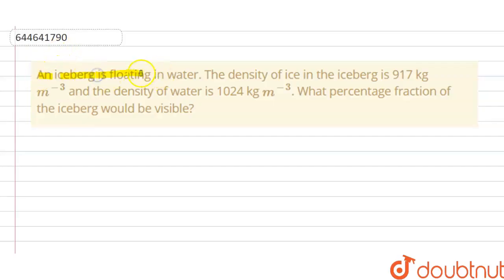An iceberg is floating in water. The density of ice in the iceberg is 917 kg per meter cubed, and the density of water is 1024 kg per meter cubed. What percentage fraction of the iceberg would be visible?